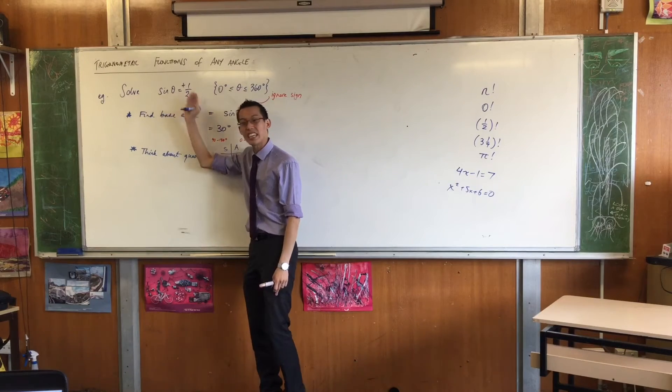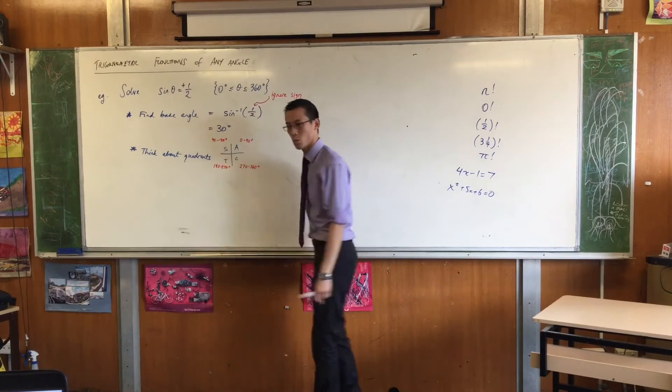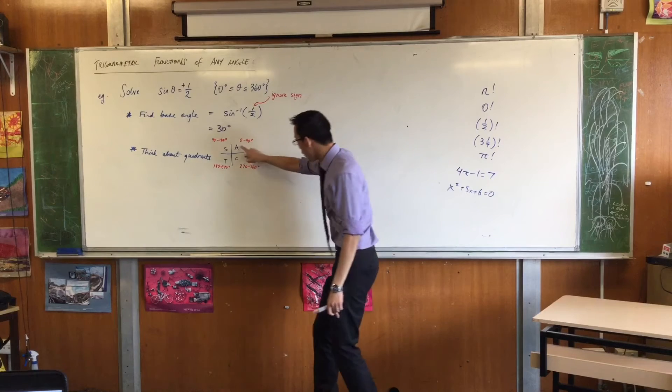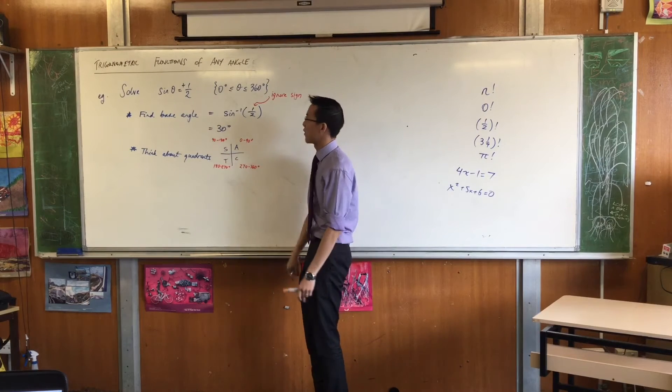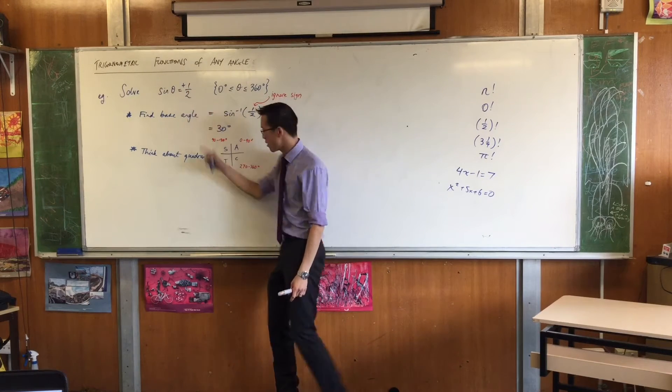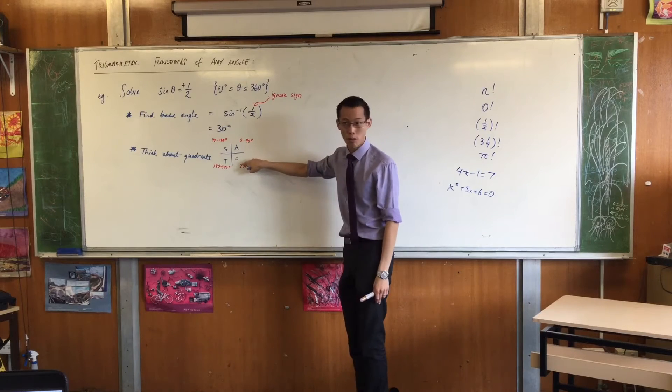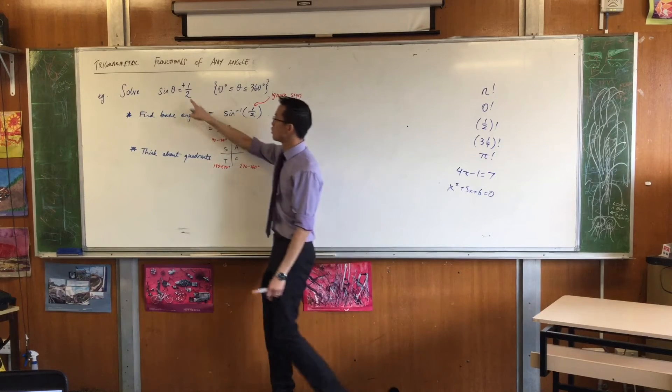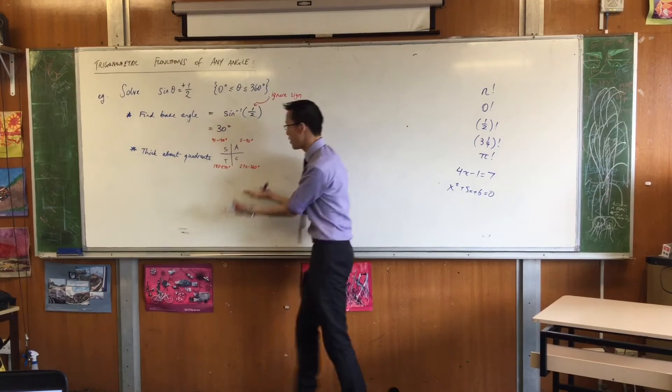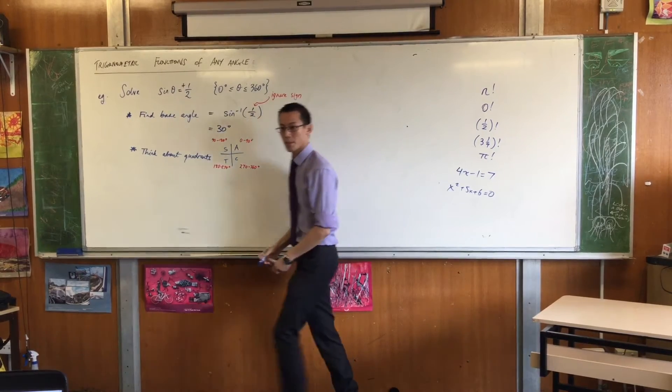If for example I had tan theta equals a half, which quadrants would I be in? First and third. First and third, right? If I had cos theta equals a half, I would be in first and fourth. Make sense? So you look at the sign and you compare it to which function you've got and then you identify the quadrants you need.